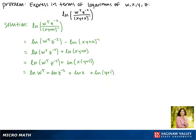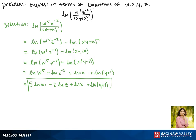And then we'll make all of our exponents into coefficients. This gives us five times the natural log of w, minus two times the natural log of z, plus the natural log of x, plus the natural log of y plus one. This is as simplified as we can make it, so this is our final answer.